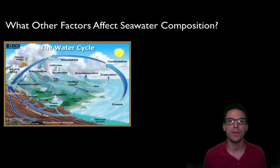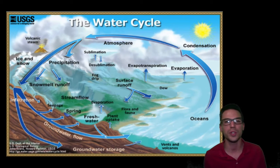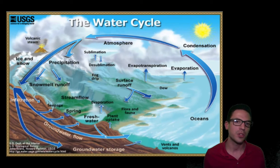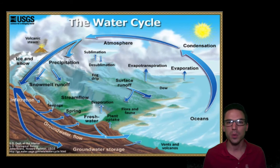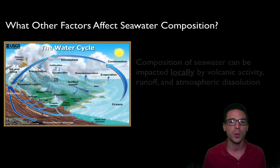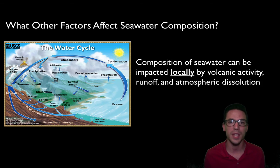Salts are not going to be the only thing we find inside ocean water. As you may know from the water cycle, water moves from the oceans up into the atmosphere, down into rivers, lakes, and streams, and runs back into the ocean — bringing other various substances with it. Three major factors that affect seawater composition locally are volcanic activity, runoff, and atmospheric dissolution.